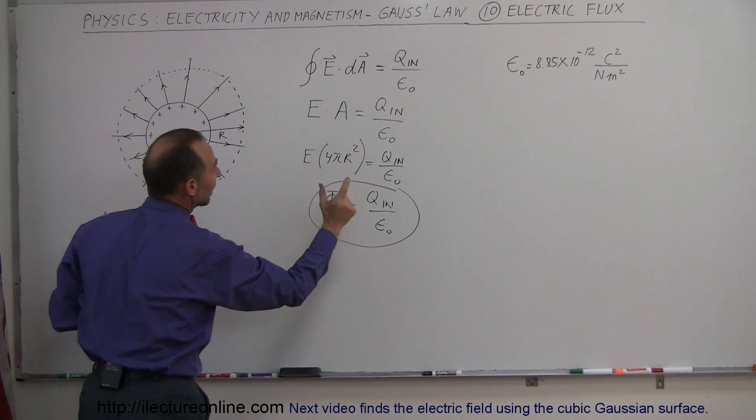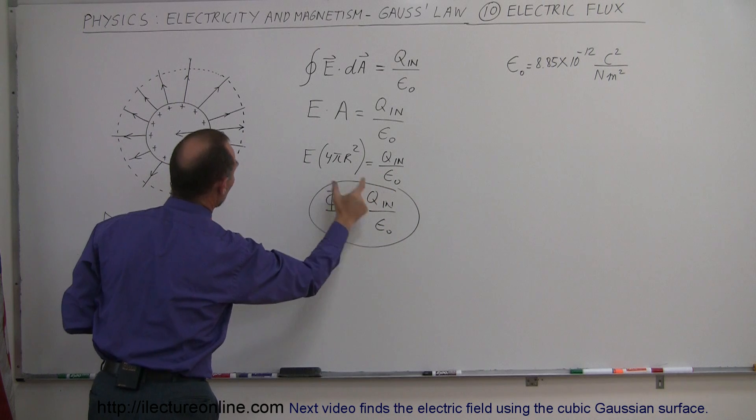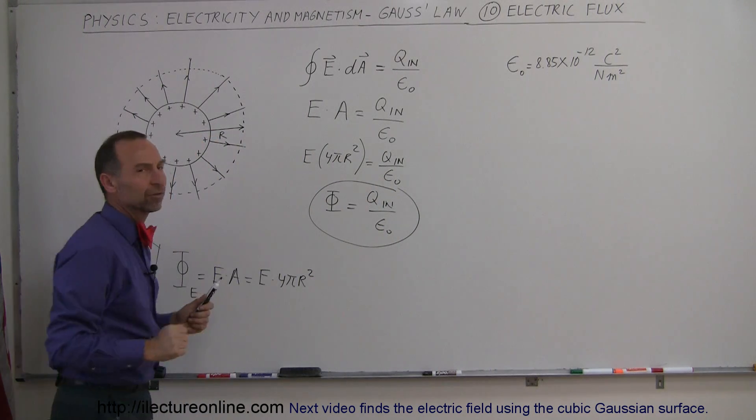The total flux emanating from this, going to the surface, will always be the exact same, depending on the charge inside divided by epsilon naught.